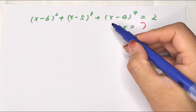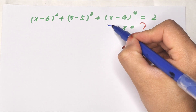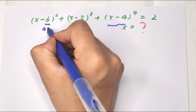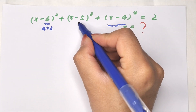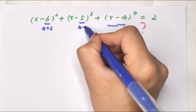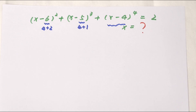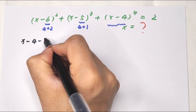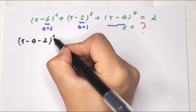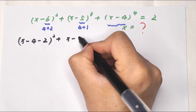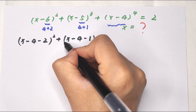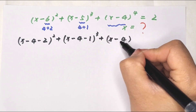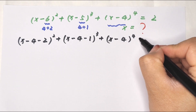So first look here: x minus 6 is the same as x minus 4 minus 2, and x minus 5 is the same as x minus 4 minus 1. So our equation can be written as (x minus 4 minus 2) squared plus (x minus 4 minus 1) cubed plus (x minus 4) to the power of 4 equals 2.